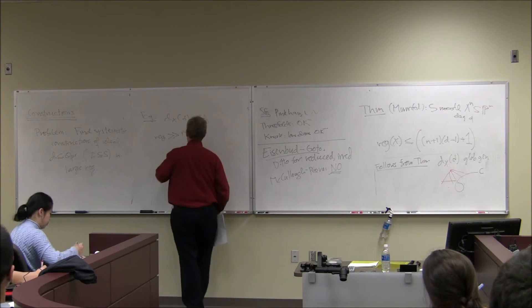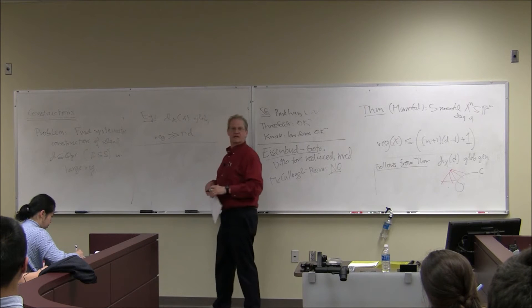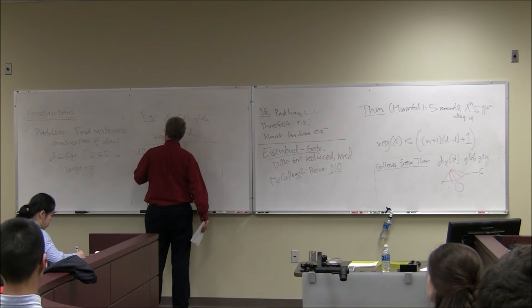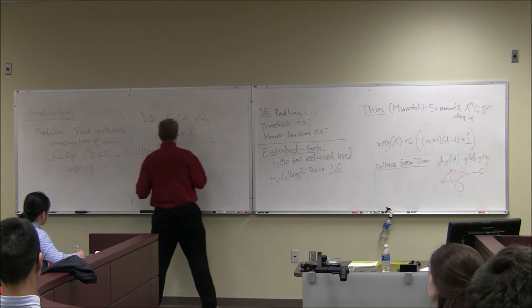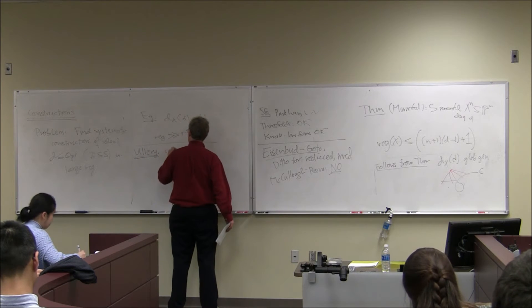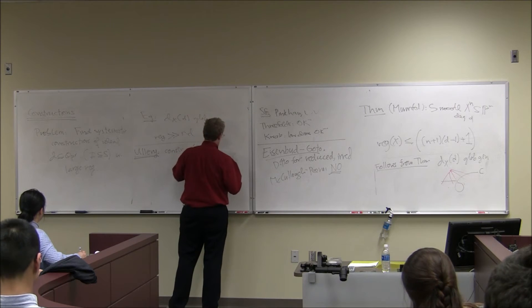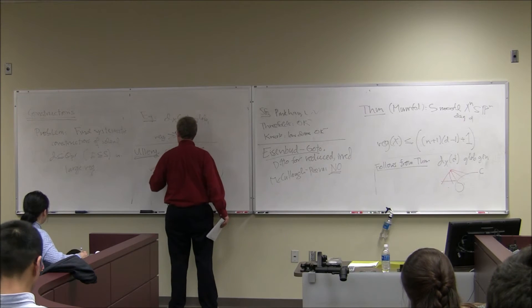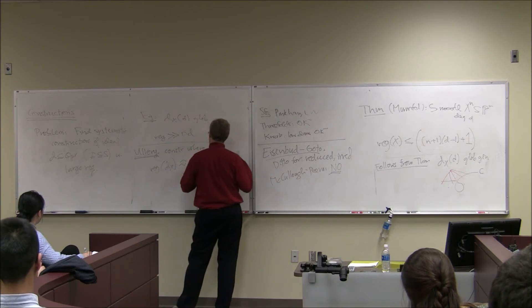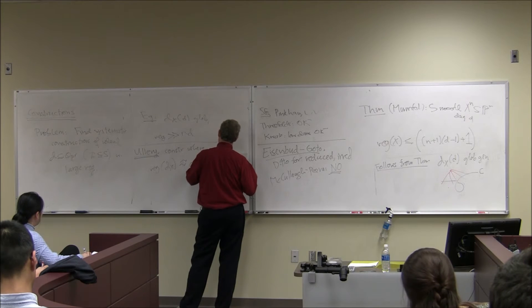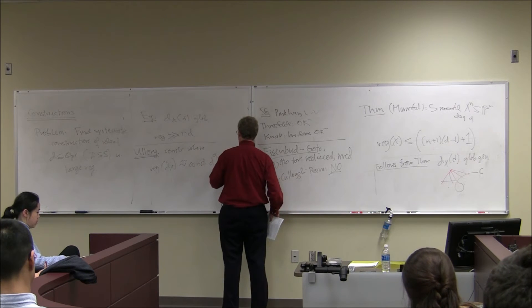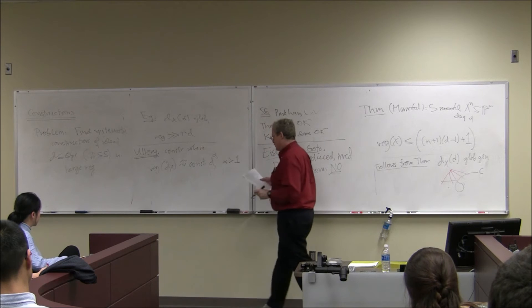Brooke Ullery gave a nice geometric construction where, roughly speaking, the regularity of the ideal is on the order of D^α where α > 1, so it grows super-linearly. But these examples define non-reduced subschemes. Let me quickly describe the idea. Start with a P^2 in P^4 — I think this is the first case where something happens. It's easy to construct vector bundles E on P^2 where E twisted by L is globally generated but the regularity of E is much larger than a constant times L.